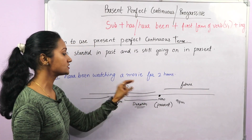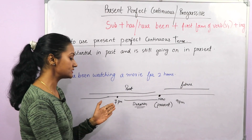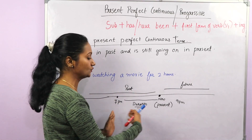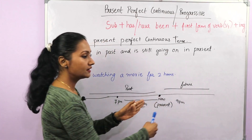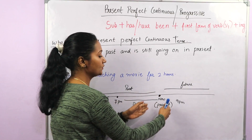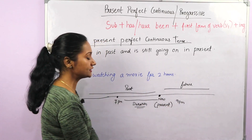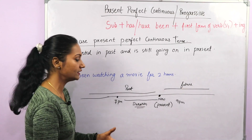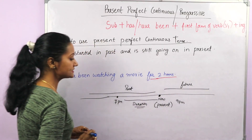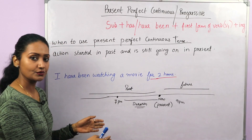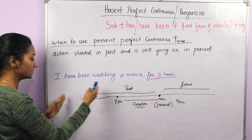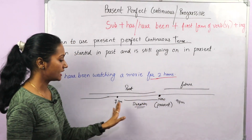The action of watching the movie started at 7 PM — two hours ago. It started in the past and continued till the present, 9 PM. It has not finished; it is still going on. It might continue further in the future for another 30 or 40 minutes. So here we have a duration — two hours — and whenever we have this kind of situation we frame sentences in present perfect continuous: 'I have been watching a movie for two hours.'